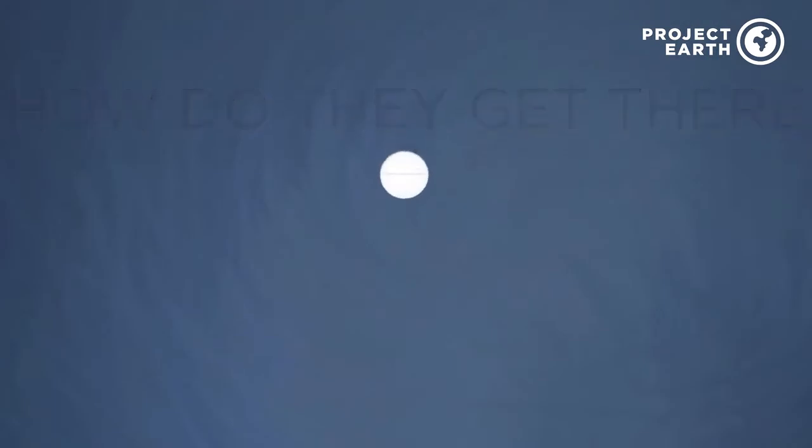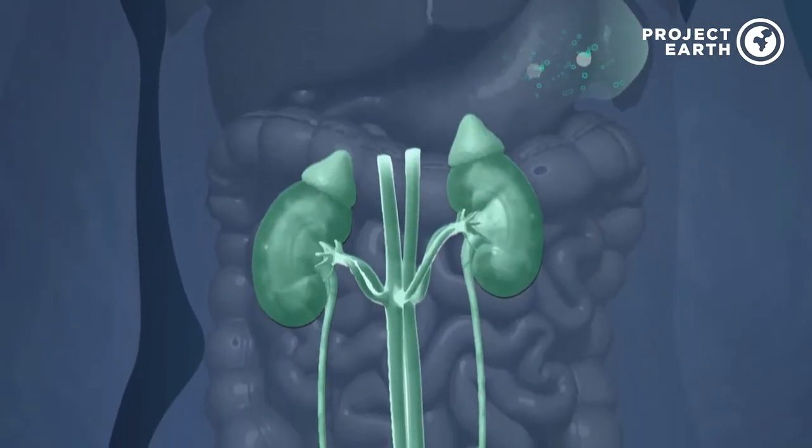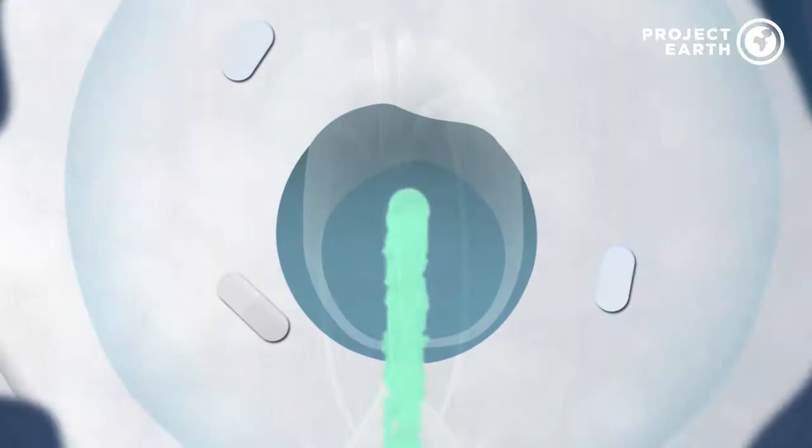So the question is, how did they get there? Well, there's two main paths. When we take medicine, our body doesn't use up all the medicine, so when we go to the bathroom, whatever remains goes into our toilet and into the sewer system.